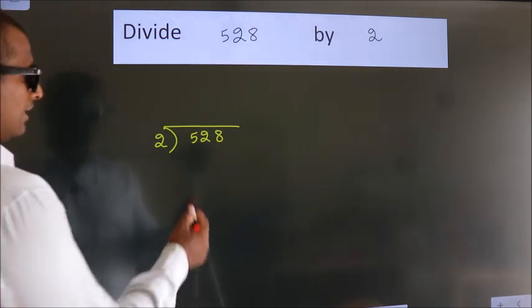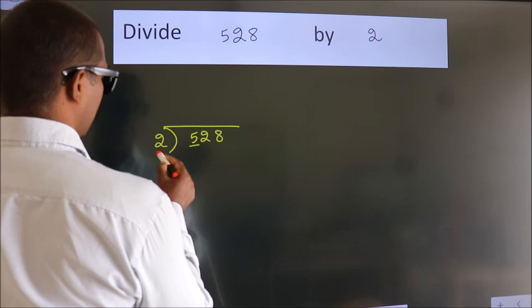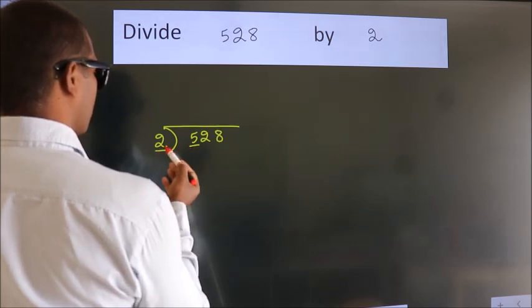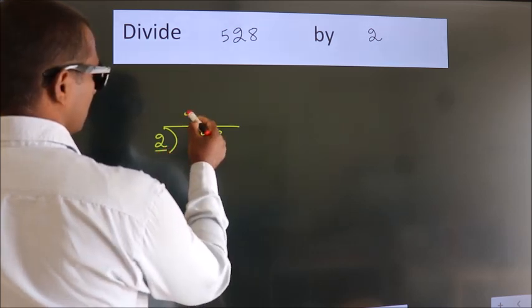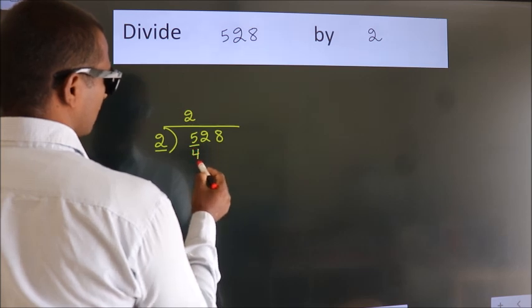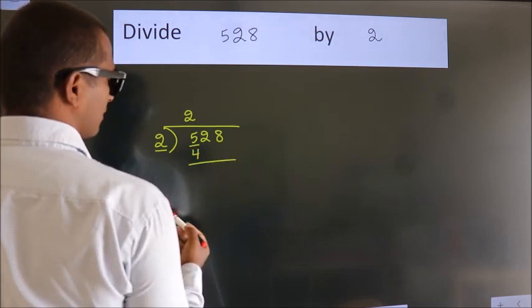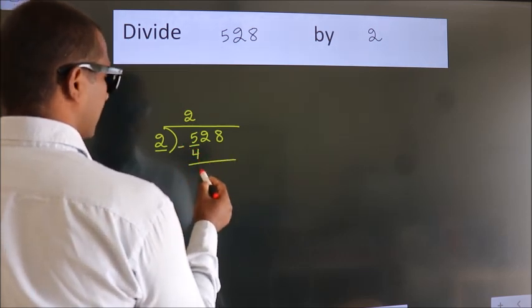Next. Here we have 5. Here 2. A number close to 5 in 2 table is 2 2s, 4. Now we should subtract. We get 1.